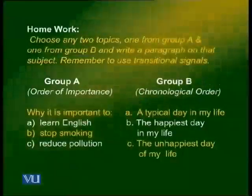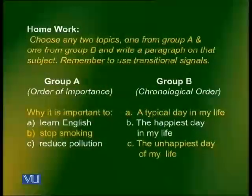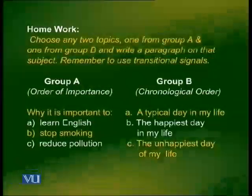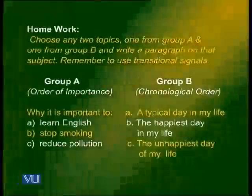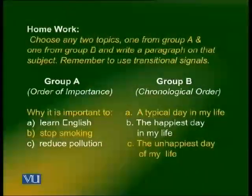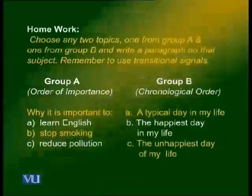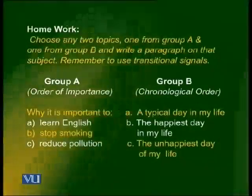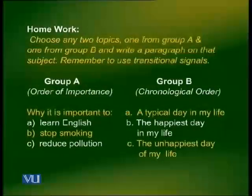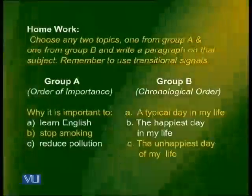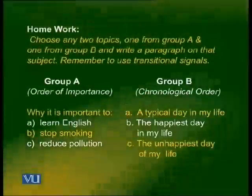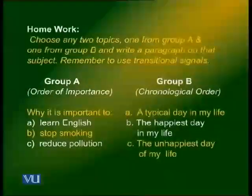For homework, you have two groups of paragraphs. Choose one from group A and one from group B — write a paragraph on any topic you would like and remember to use transitional signals. Group A — the paragraph on the order of importance — write on why it is important to learn English, to stop smoking, or to reduce pollution. Group B — in chronological order — write on a typical day in your life, the happiest day in your life, or the unhappiest day of my life. With that we come to the end of today's lesson. Allah Hafiz, see you next time.